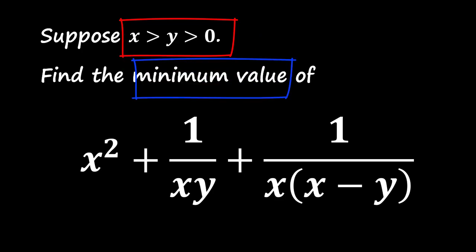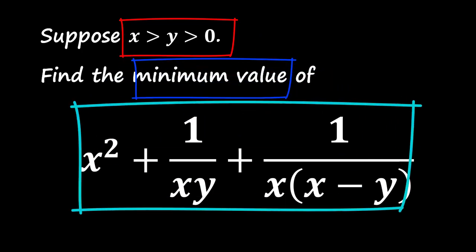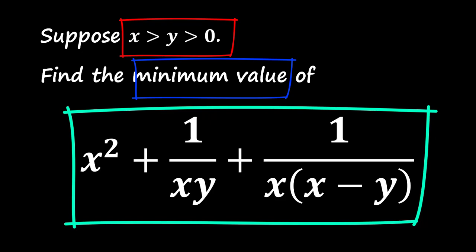Find the minimum value of the expression: x squared plus 1 divided by xy plus 1 divided by x times the quantity x minus y.